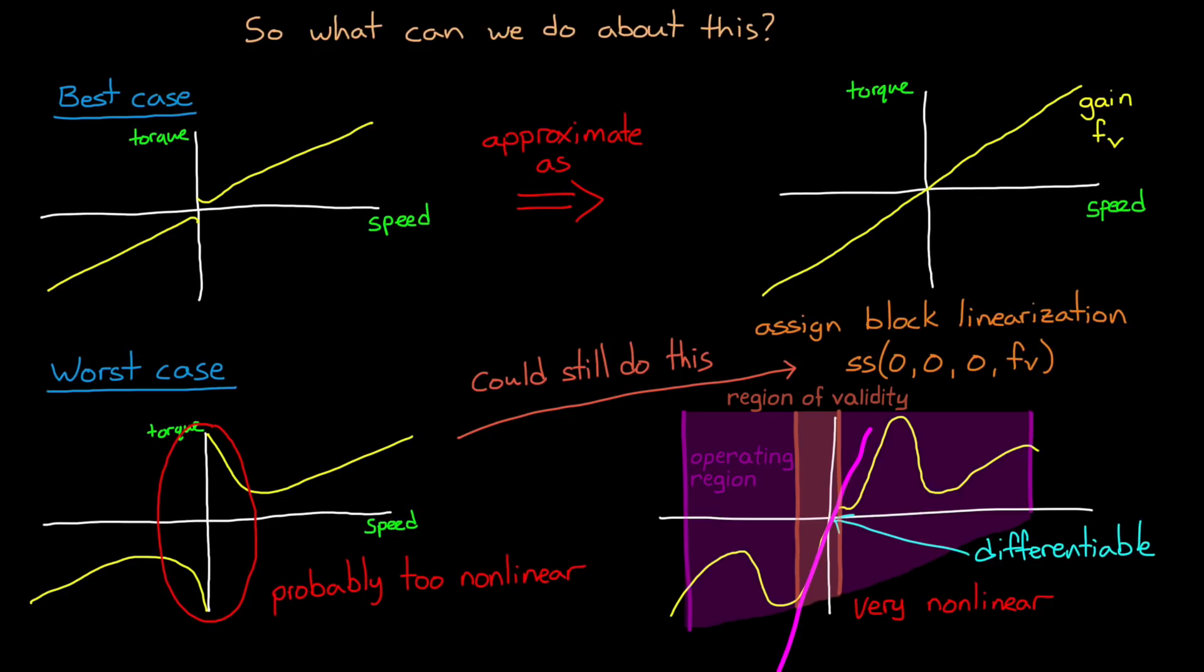This is what I meant earlier when I said we could hit some snags in the linearization process if we don't fully understand the nature of the system we're linearizing. Just because a system is not differentiable doesn't mean you can't fit a good linear model to it. But on the flip side, a linear model of a differentiable system that is highly non-linear might exclude some really important dynamics.